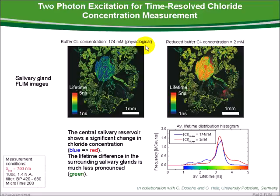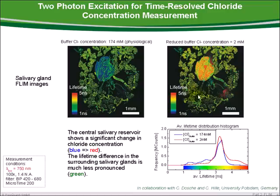At the left side, a physiological buffer chloride concentration was applied. The salivary reservoir in the center shows a relatively low fluorescence lifetime. After this measurement, the chloride concentration inside the buffer was reduced to 2 millimolar. The reduction leads to a strong change in lifetime of the salivary reservoir, indicating a chloride concentration below 50 millimolar. However, the chloride concentration in the surrounding glands stays nearly unchanged.